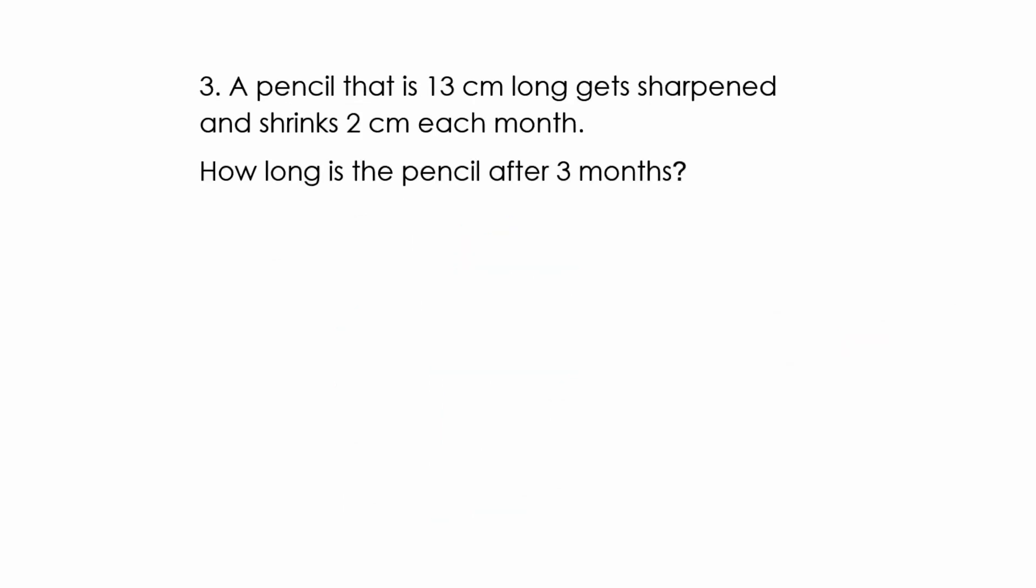A pencil that is 13 centimeters long gets sharpened and shrinks 2 centimeters each month. How long is the pencil after 3 months? Once again, let's get the T-chart. We're going to call this side month and this side is length of the pencil. So we're going to assume 0 is going to start, the month it is 13, and in this one here we're subtracting 2. So after 1 month it's 11 centimeters. After 2 months again we're subtracting 2, it is 9 centimeters. And it asks for 3 months, again you are subtracting 2, making it 7 centimeters.